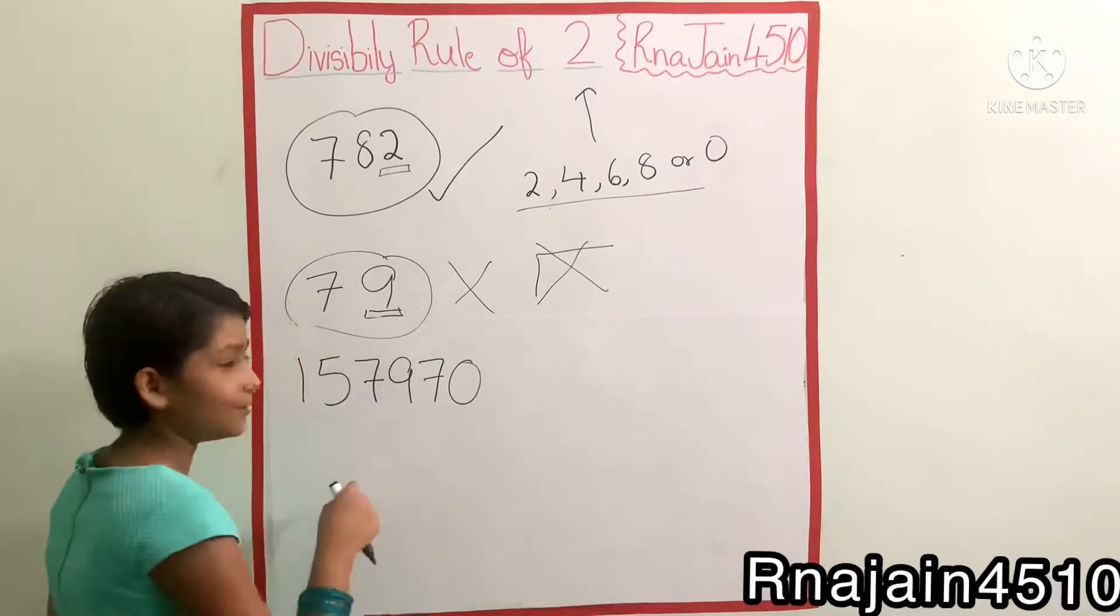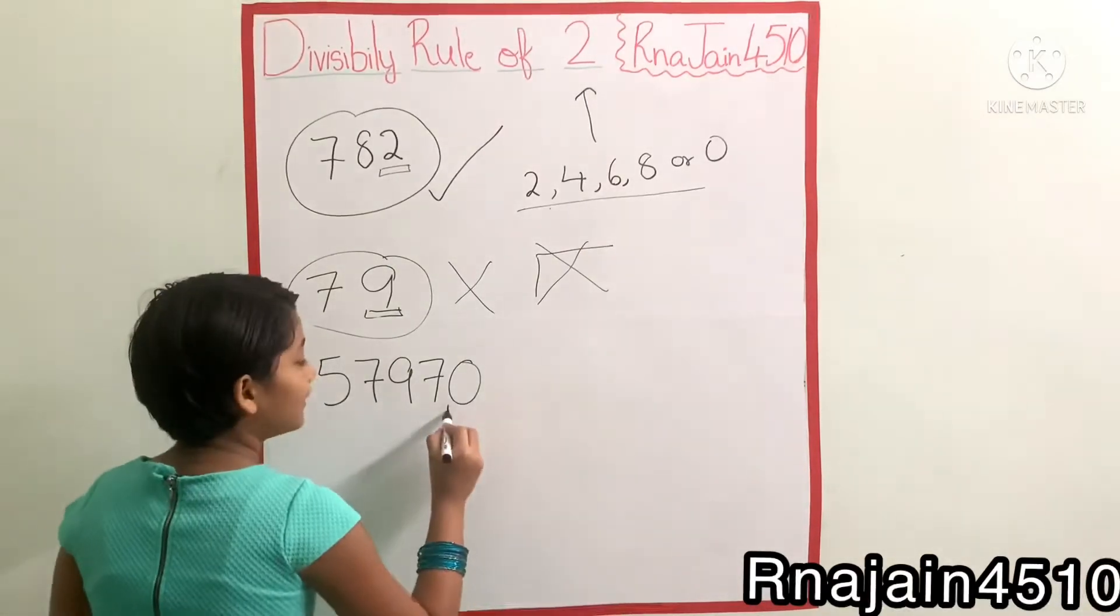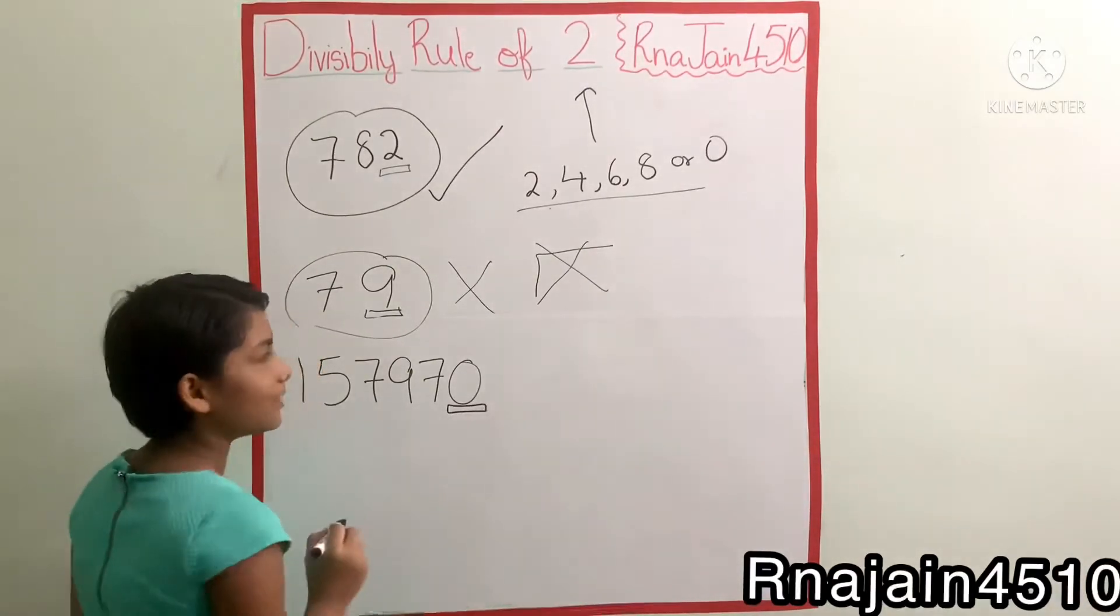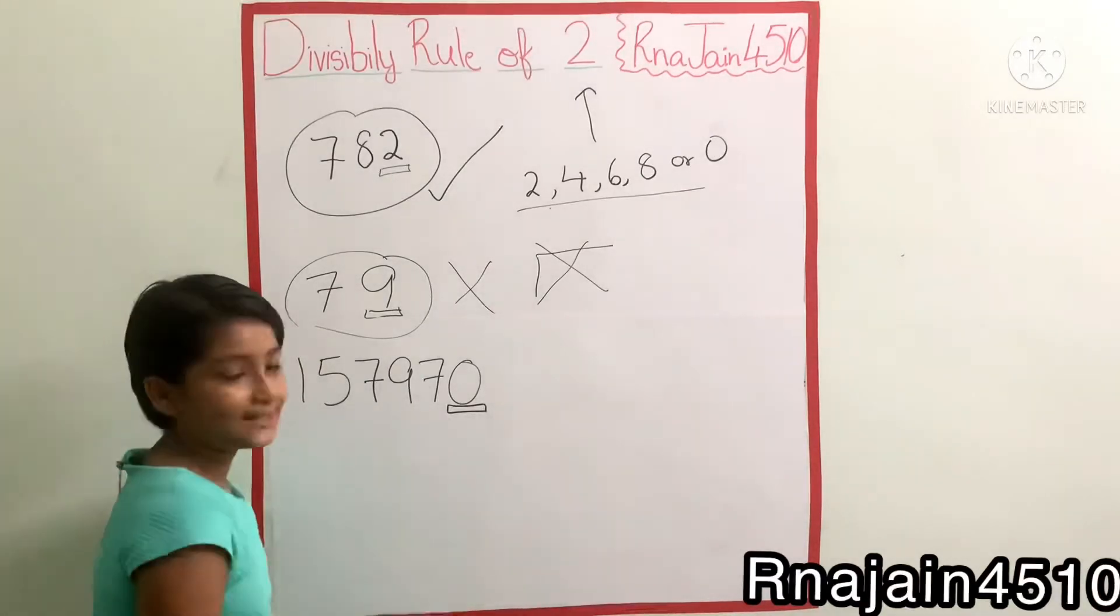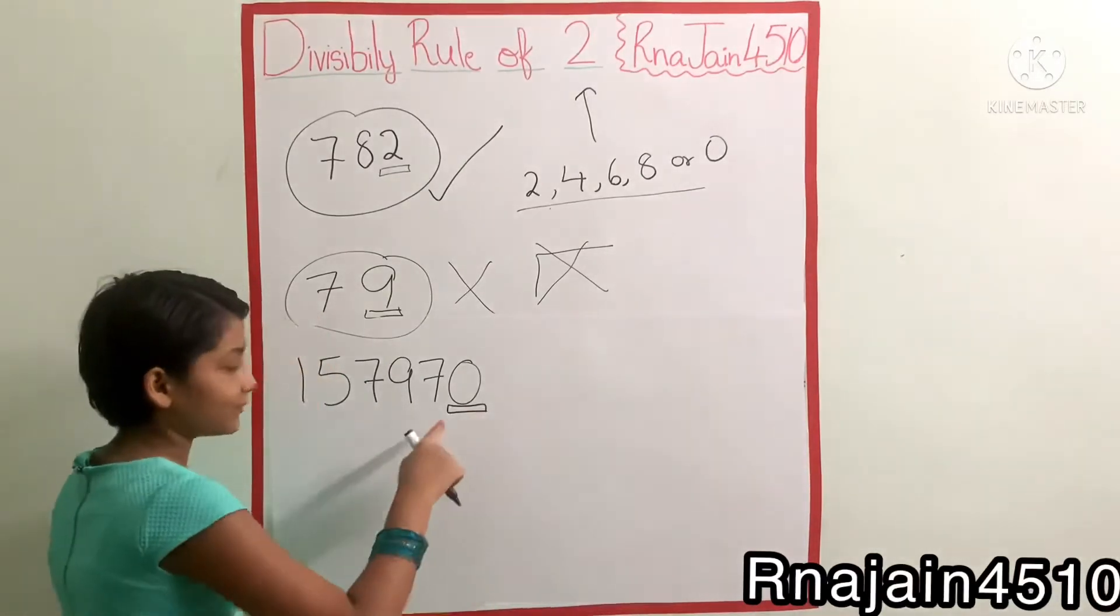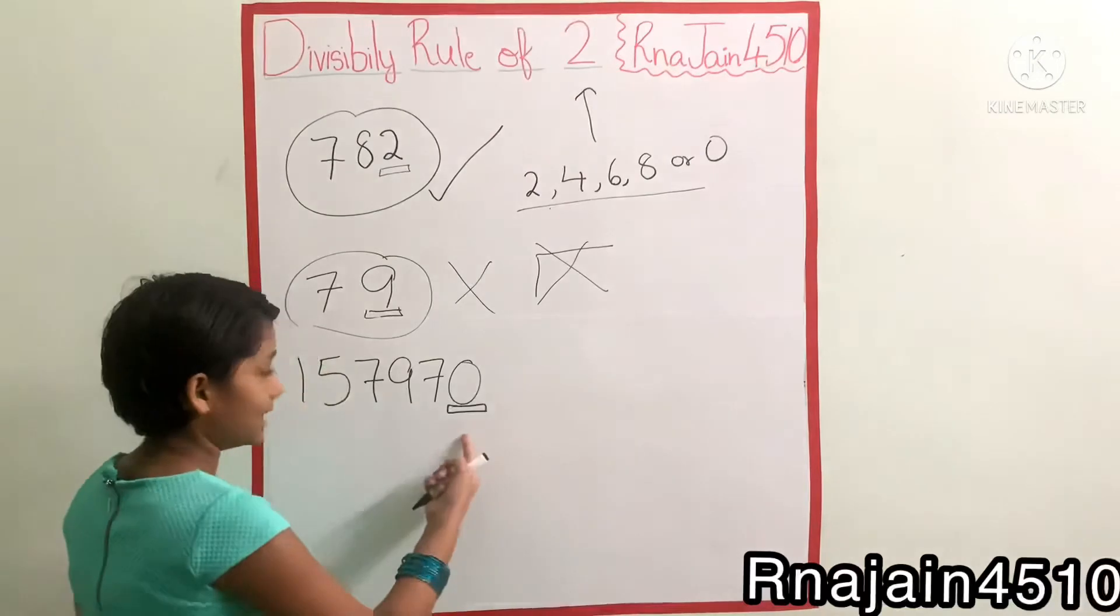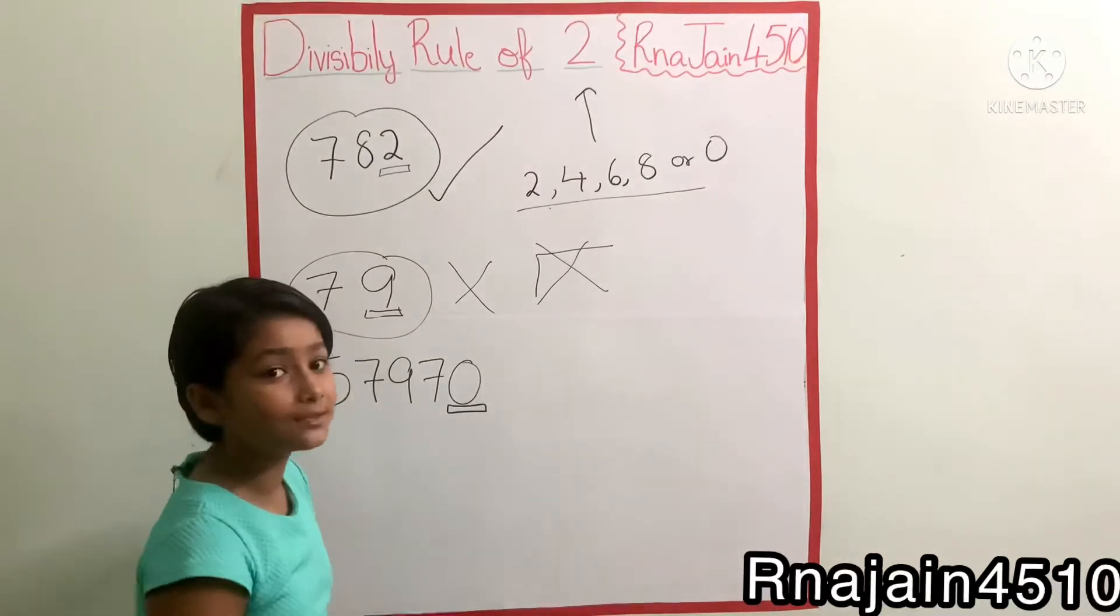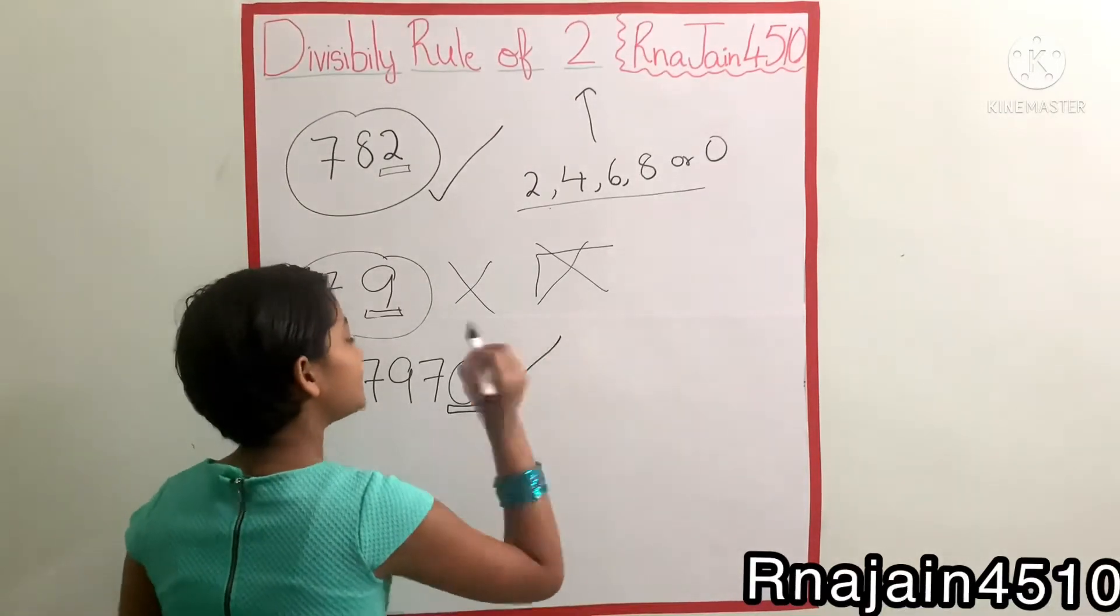Don't be scared, it will be very easy for you. Now you will just see the last number and you will check if the condition is applying. Yes, it has 2, 4, 6, 8, 0.